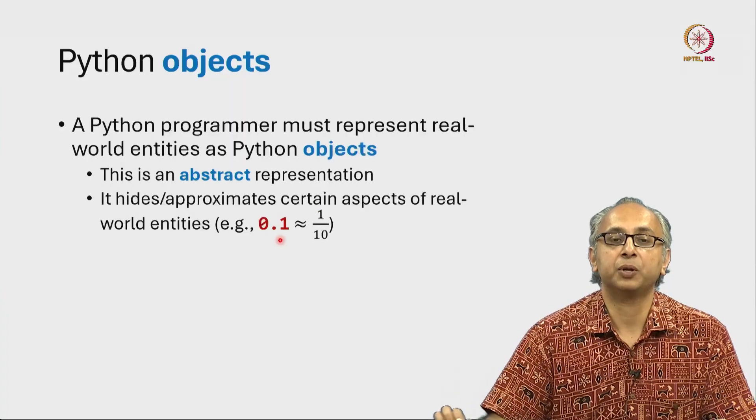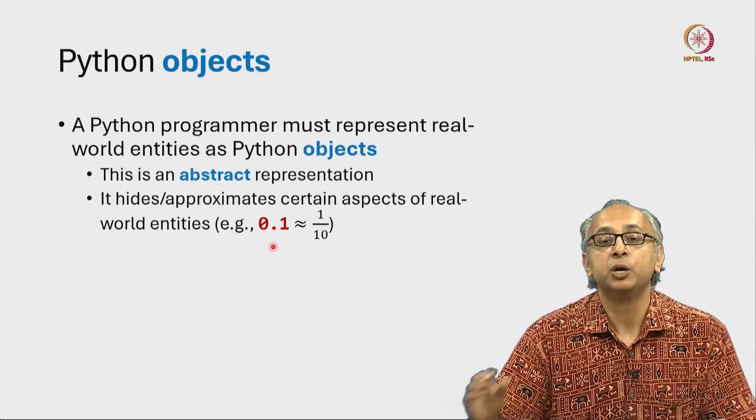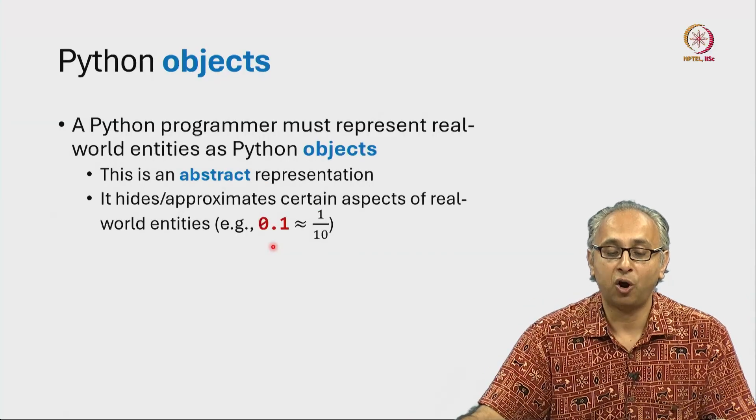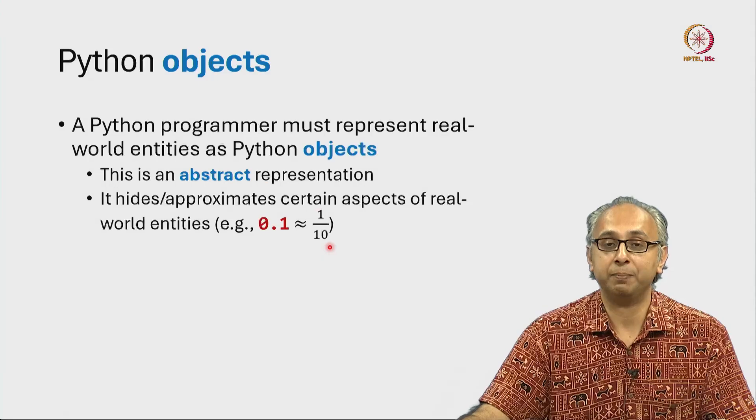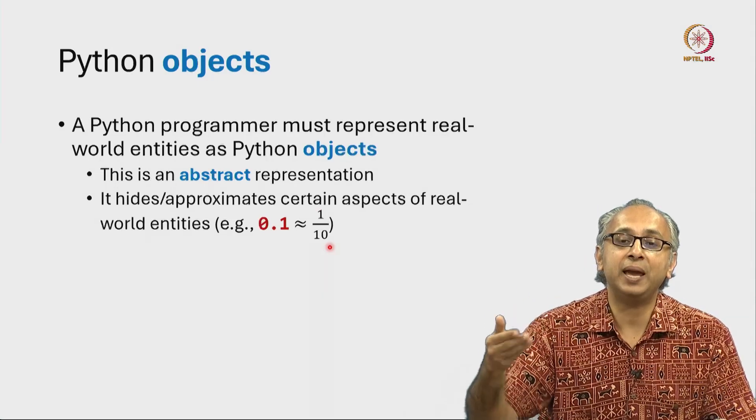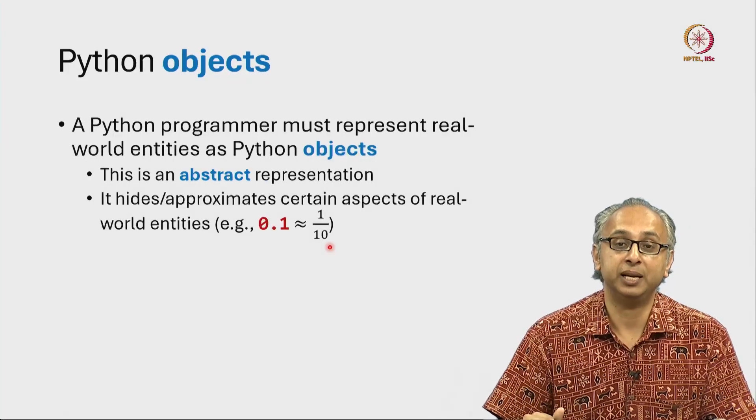So in Python, when we have the floating point value 0.1, we have already seen that that is an approximation of the mathematical quantity 1 by 10. And because it's an approximation, it does not obey mathematical properties that we are familiar with.